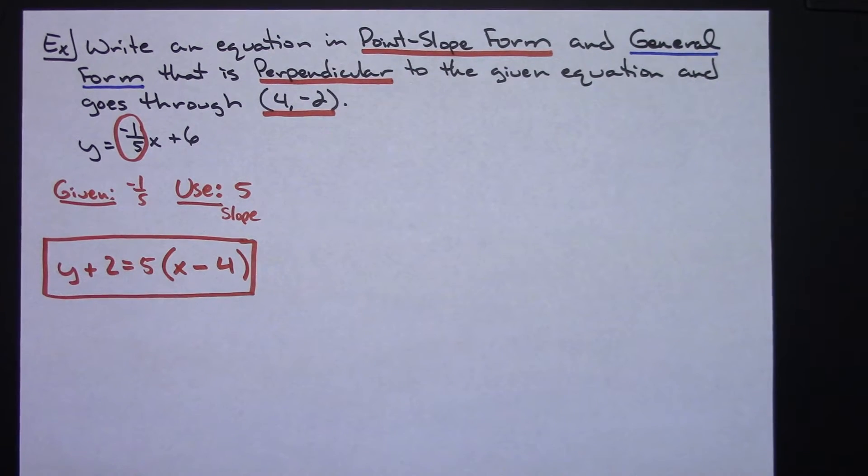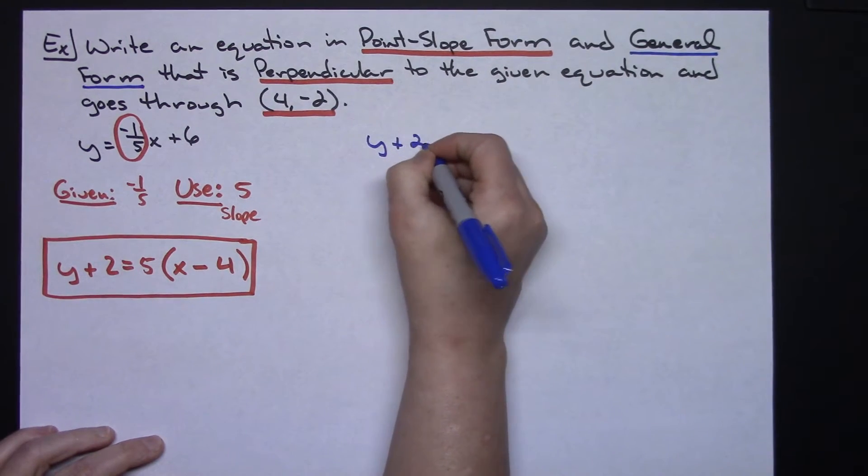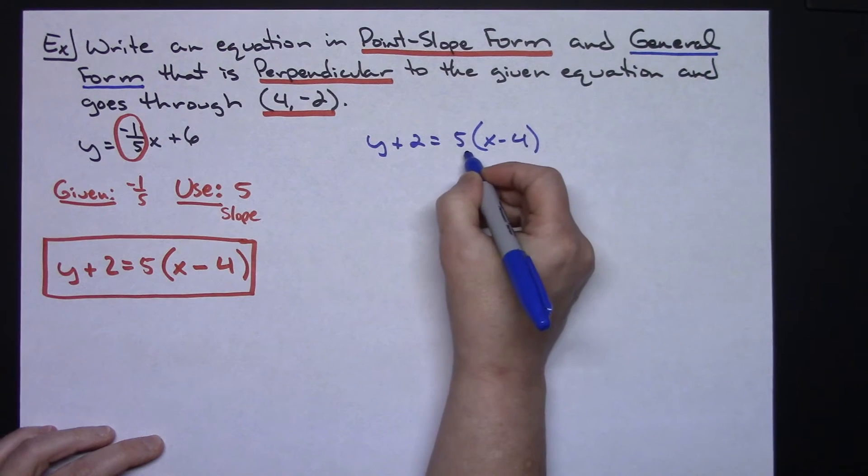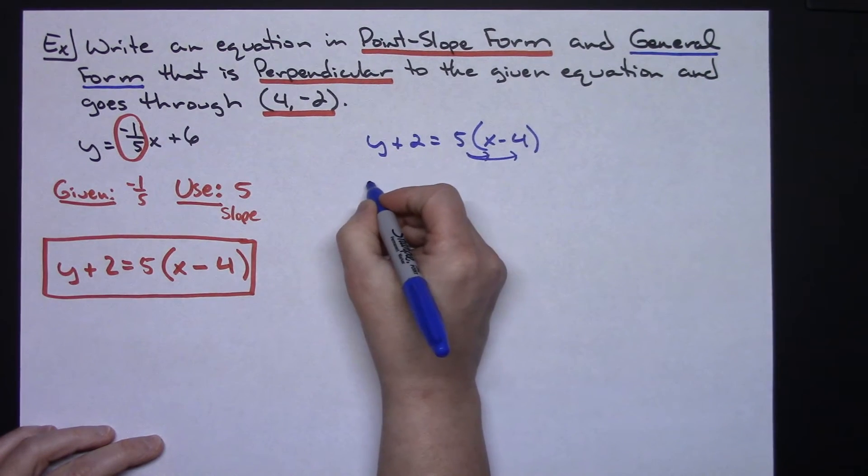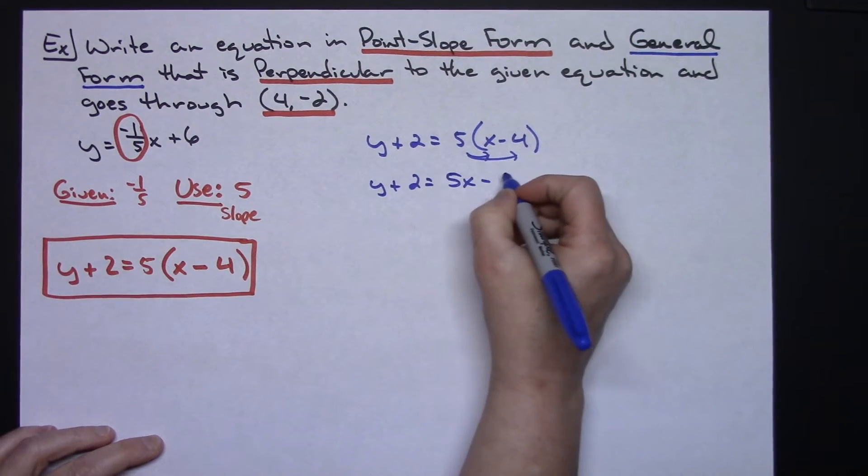Now I'm going to take that point-slope form and I'm going to rewrite it into general form. So we'll take that y plus 2 equals 5 times the x minus 4. Okay, I'm going to distribute, so y plus 2 equals a 5x minus a 20.